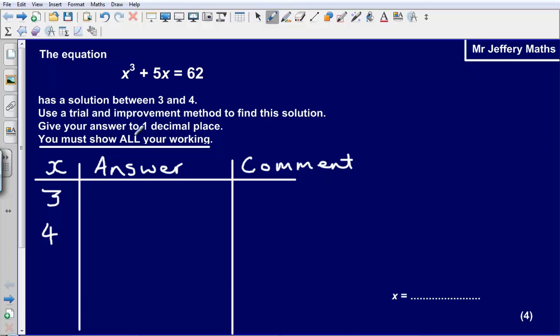So I am going to substitute 3 into this equation and I will have 3³ + (5 × 3). And what does that equal? Well 3 cubed will be 27 plus 5 times 3 is 15. So 27 plus 15 gives me an answer of 42. So in this comment box at the end, what could I say about my answer here? I could say that this is too small. So my answer when x is 3 was it was too small. It is 20 too small.